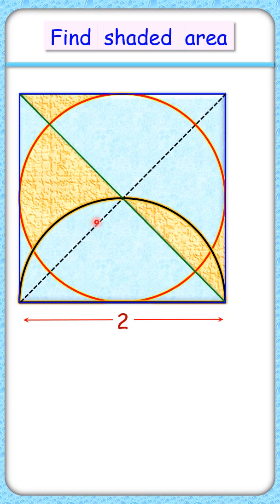So these diagonals divide the square in 4 equal areas. So area of full square is 4 cm square. So area of each triangle will be 1 cm square.